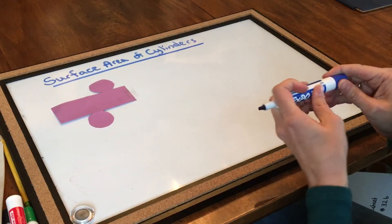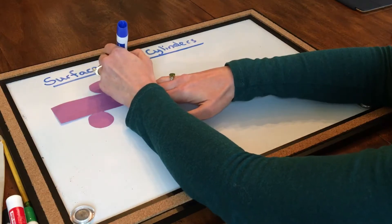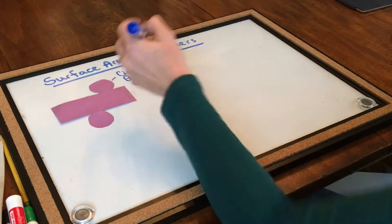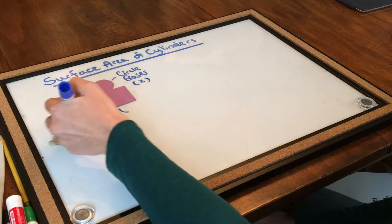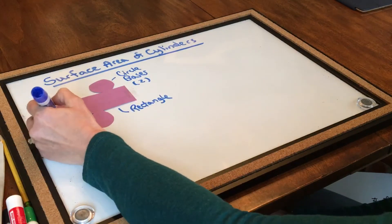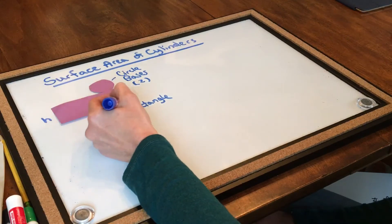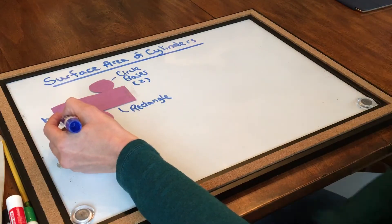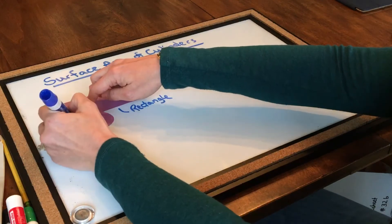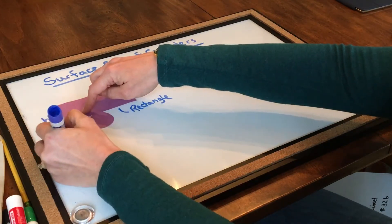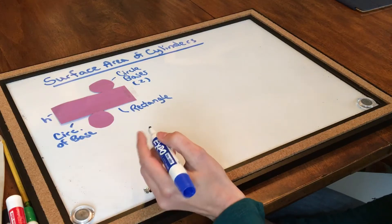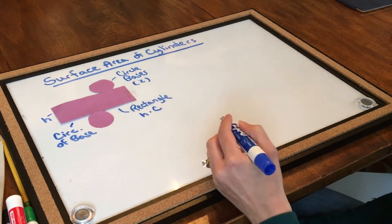This is really important, because this is going to help us derive our surface area formula. So what we can see for surface area is that we have circle bases, and we have two of them. We can also see that the middle is a rectangle, and this is its height. And when we think about it, the edge, so the long edge of the rectangle, is actually the circumference of the base. And in order to find the area of that rectangle, we'll need to take the height times the circumference.